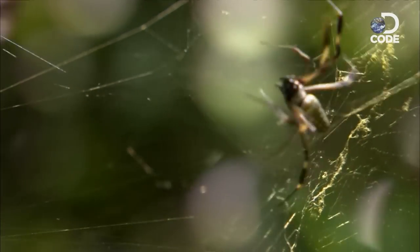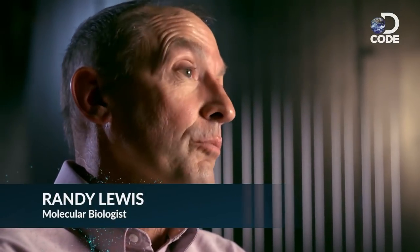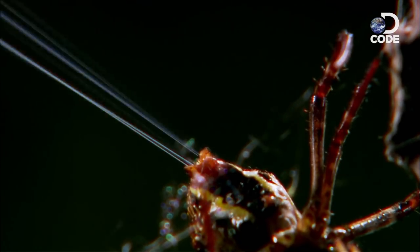Spider silk is composed almost entirely of protein. It's about three times stronger than Kevlar and about ten times stronger than steel and more elastic than nylon.